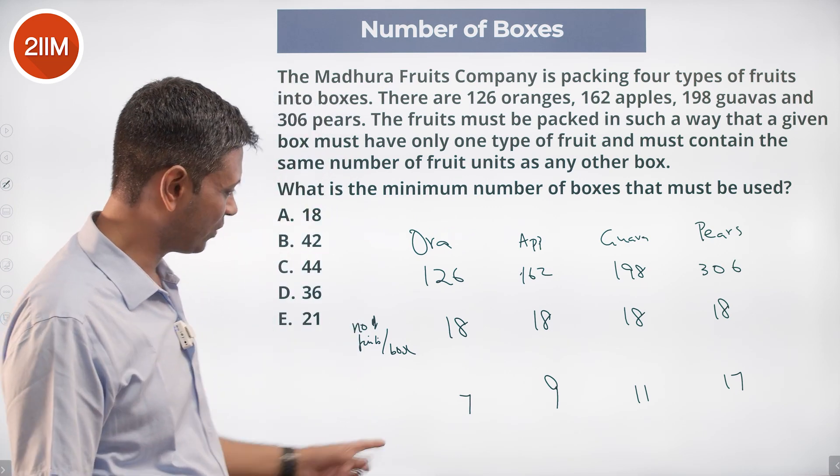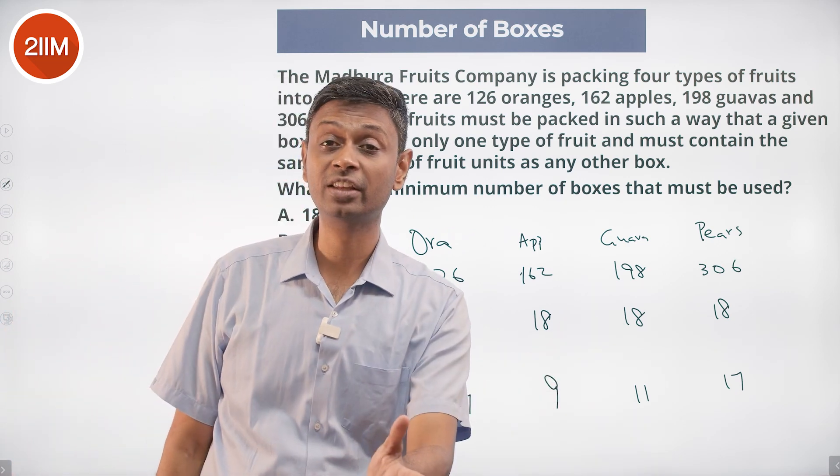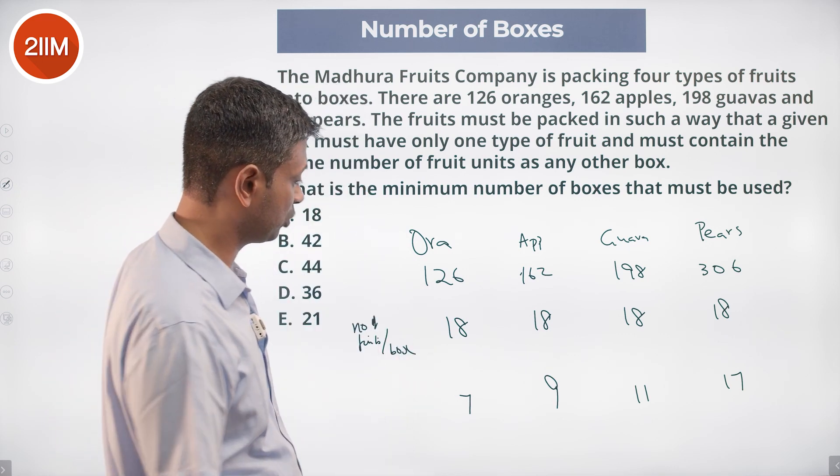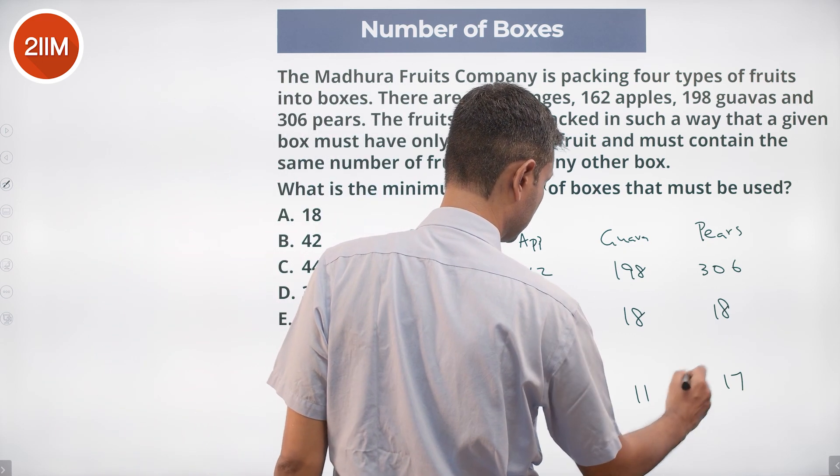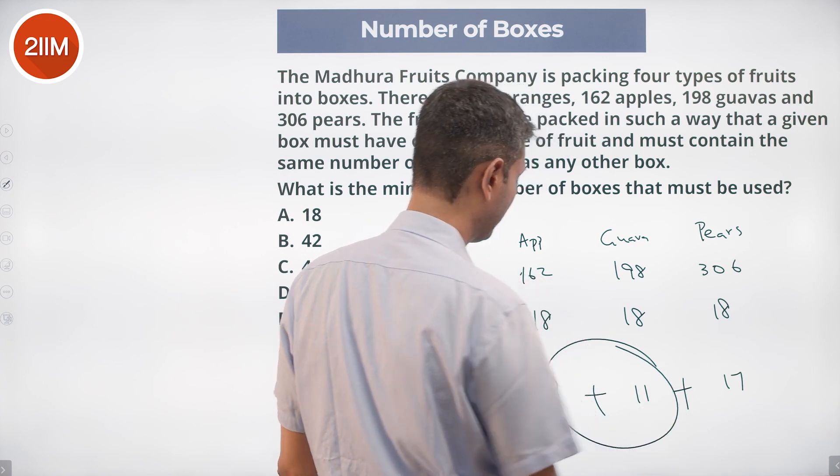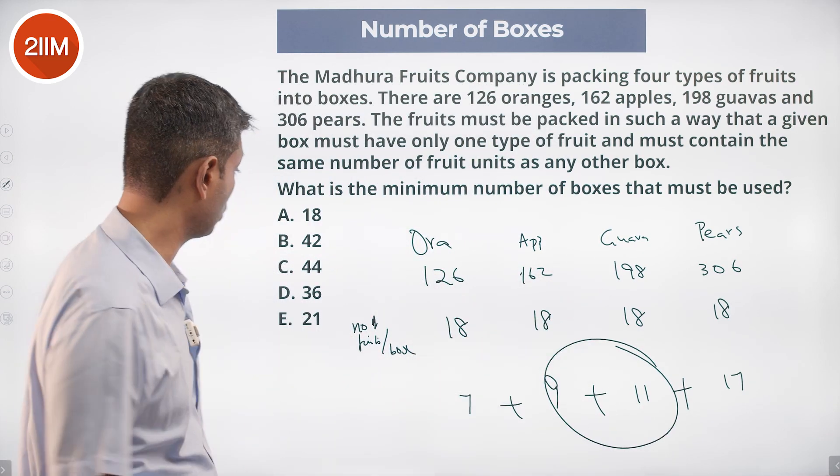So 7, 9, 11, 17 - they have nothing in common. What is the minimum number of boxes? 7 plus 9 plus 11 plus 17. These two add up to 20, 37, 44.